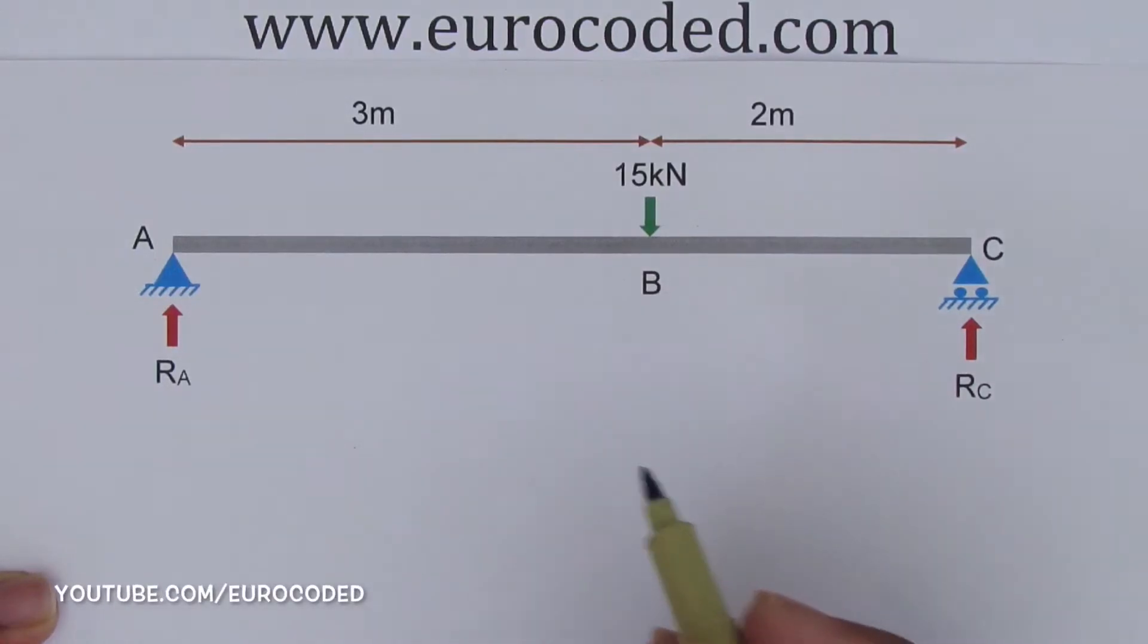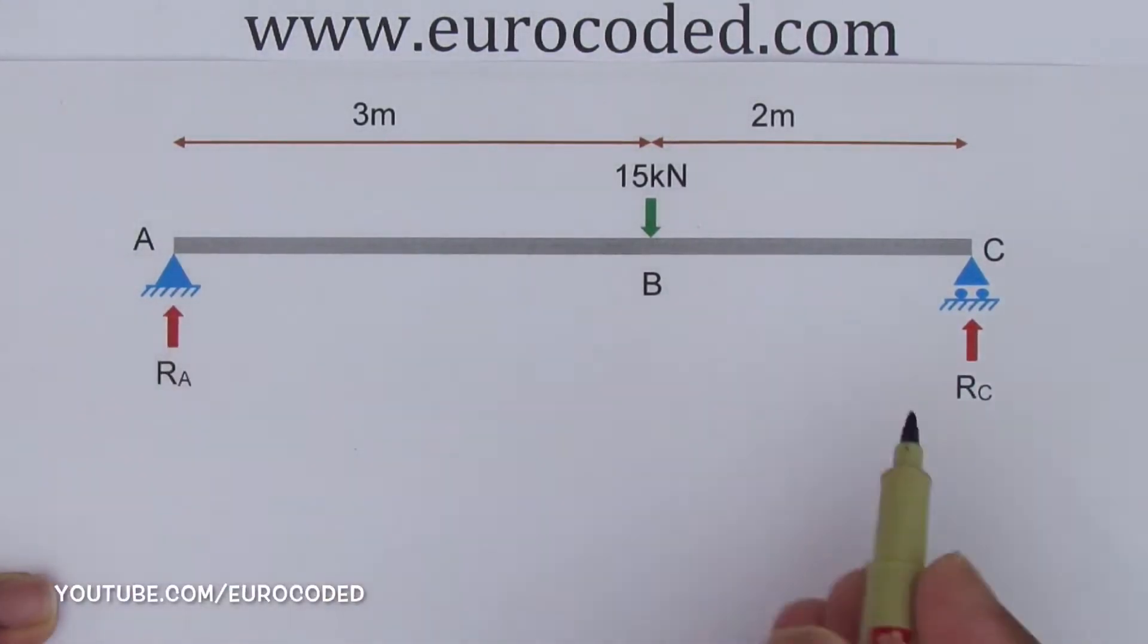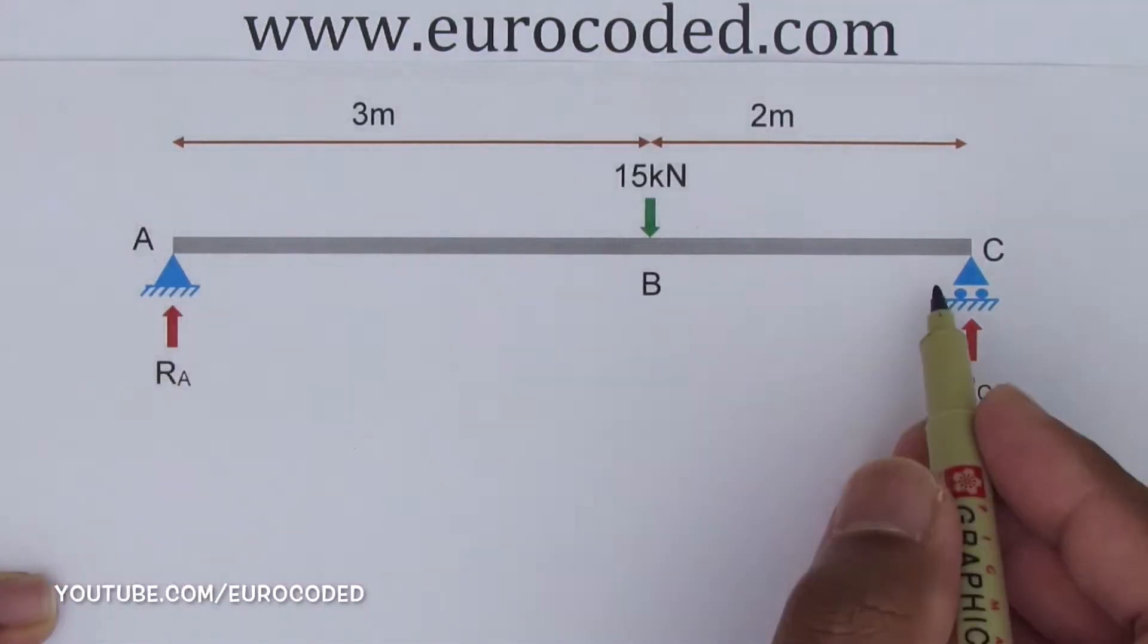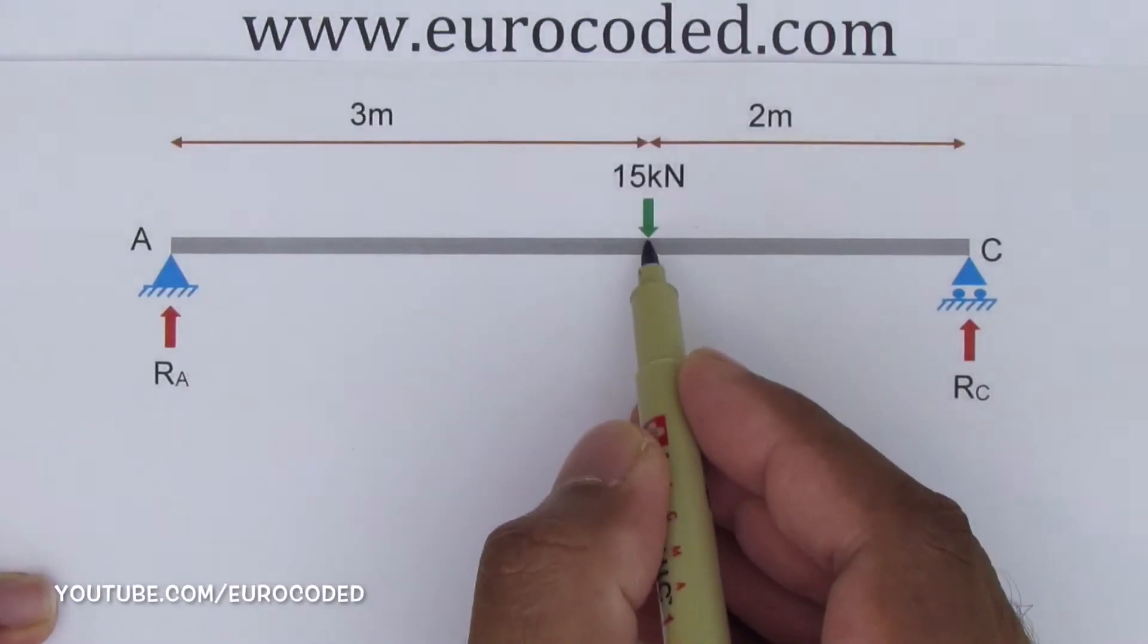In our previous video, we calculated support reactions RA and RC of this simply supported beam with a point load of 15 kN applied onto the beam.